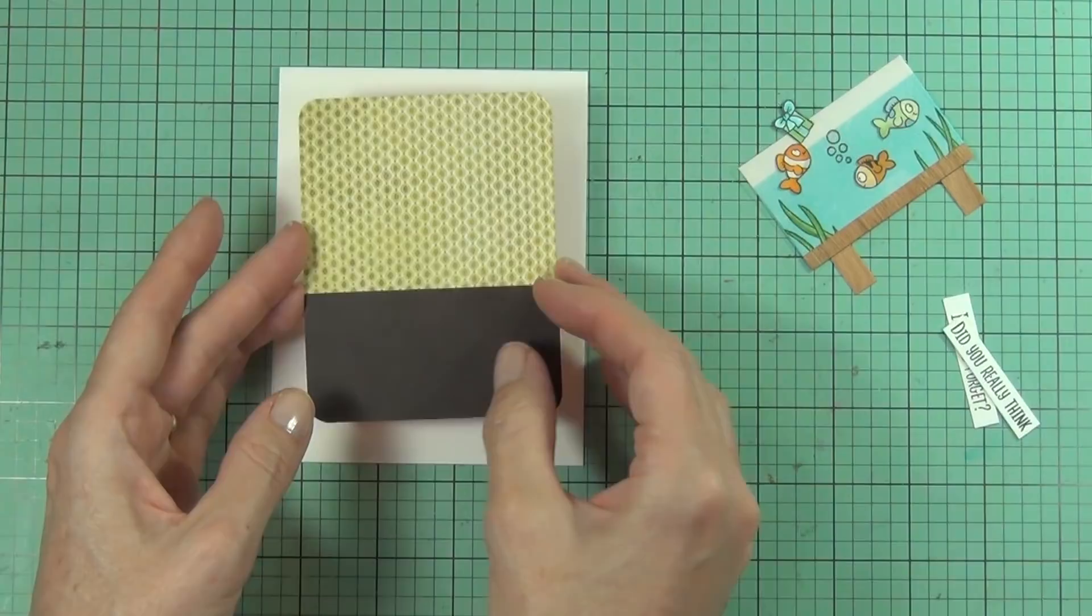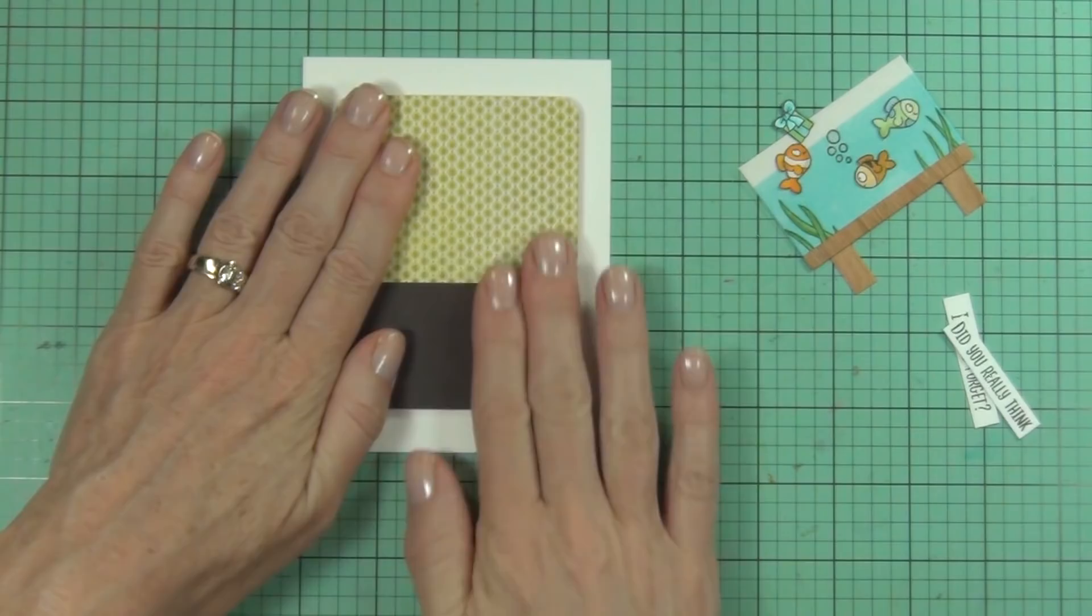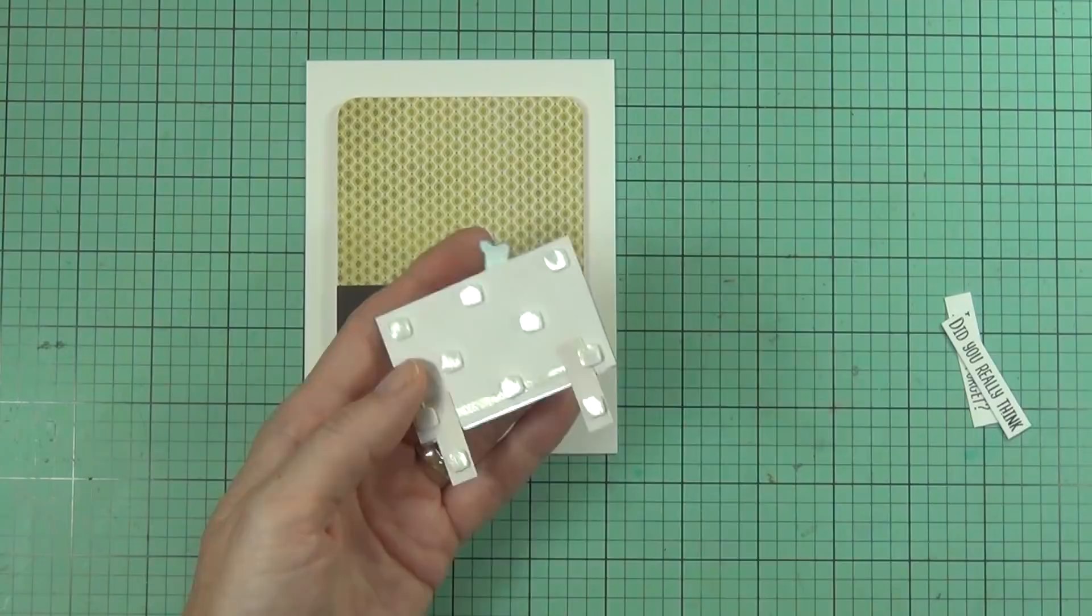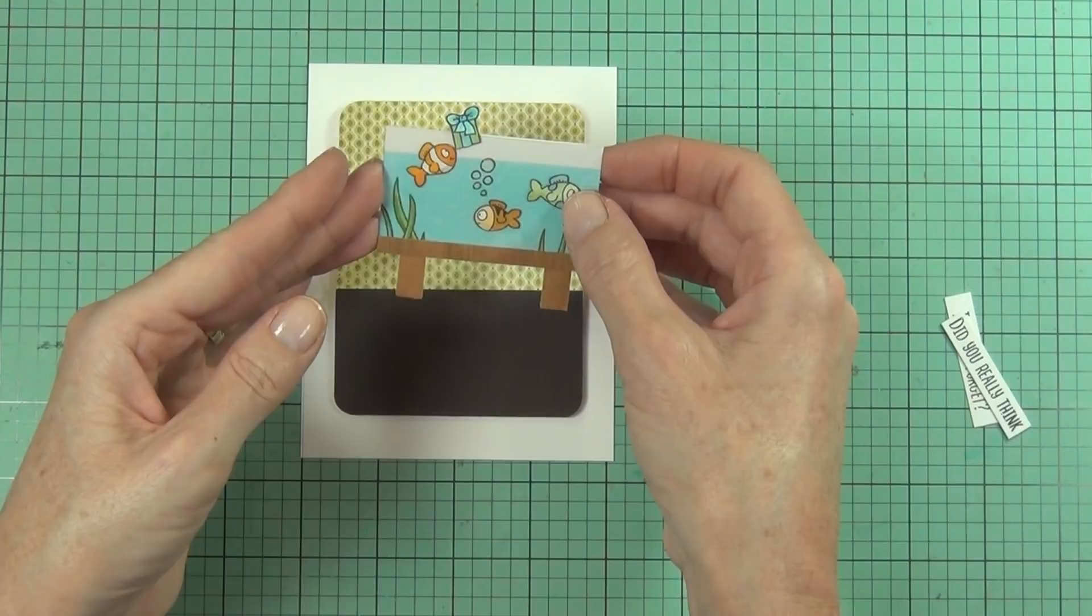And I'm going to adhere this on the front of a top fold card so it's a little bit smaller than a normal Australian size card—it's more like an American sized card this one. And then I'll just use some foam squares to pop up my fish tank. And you can see here I thought I was going to do my sentiment in two pieces. Ignore that.